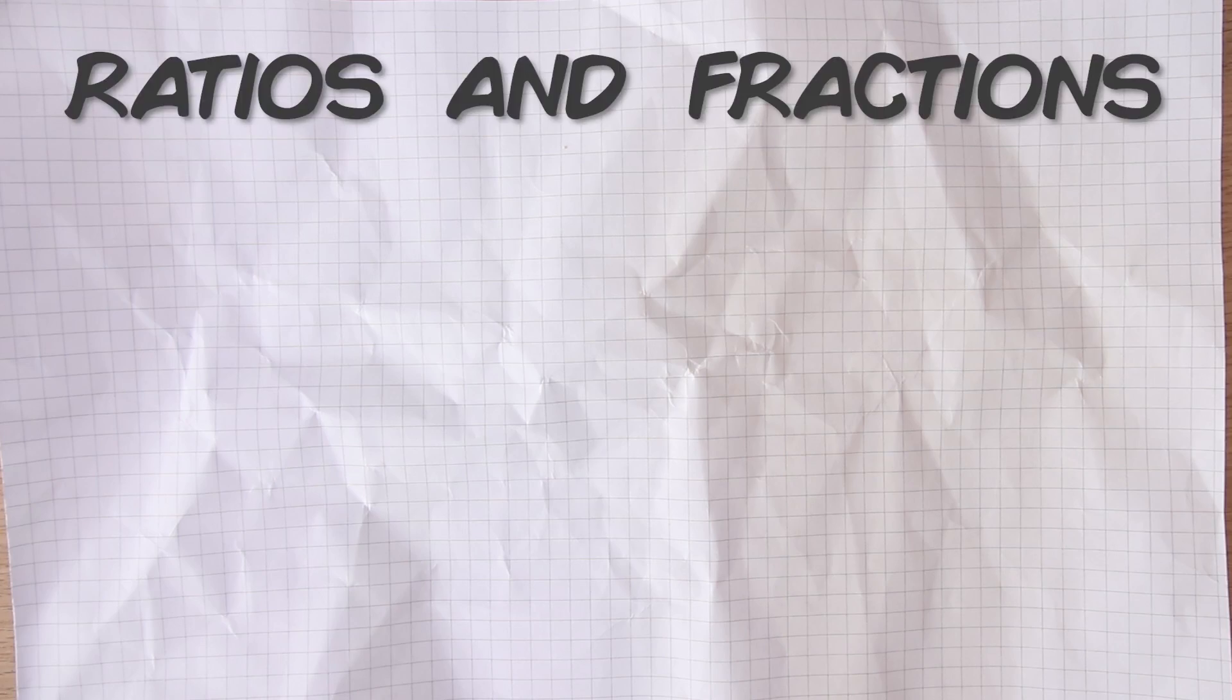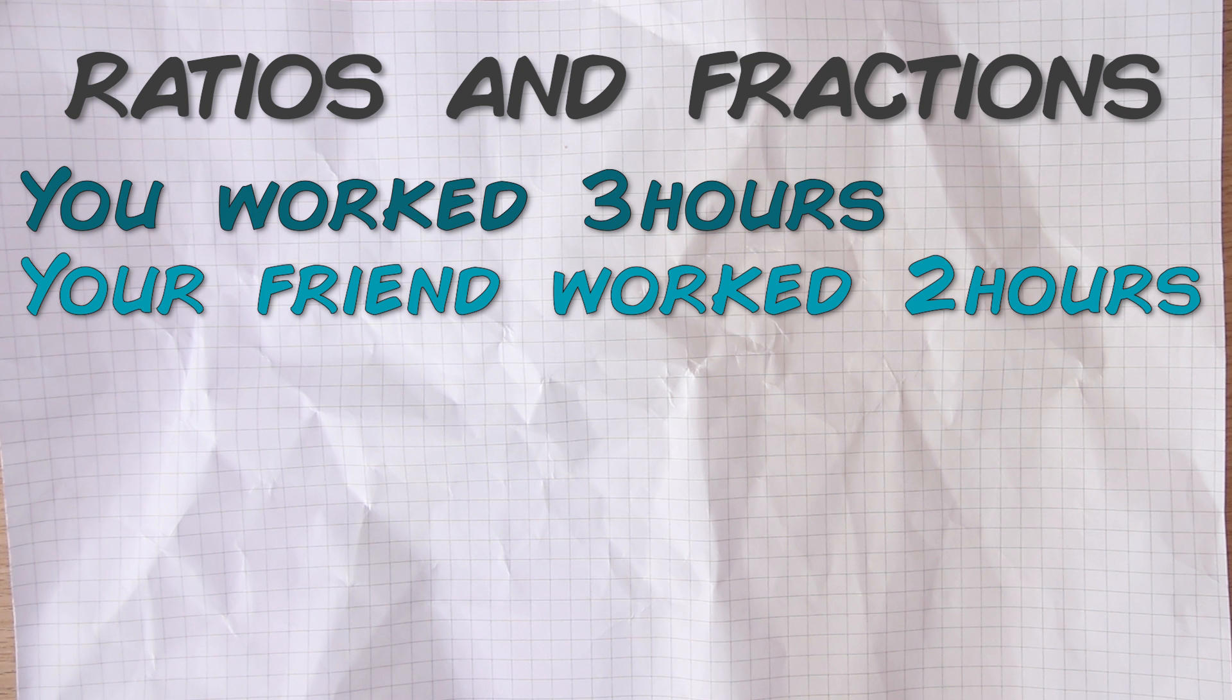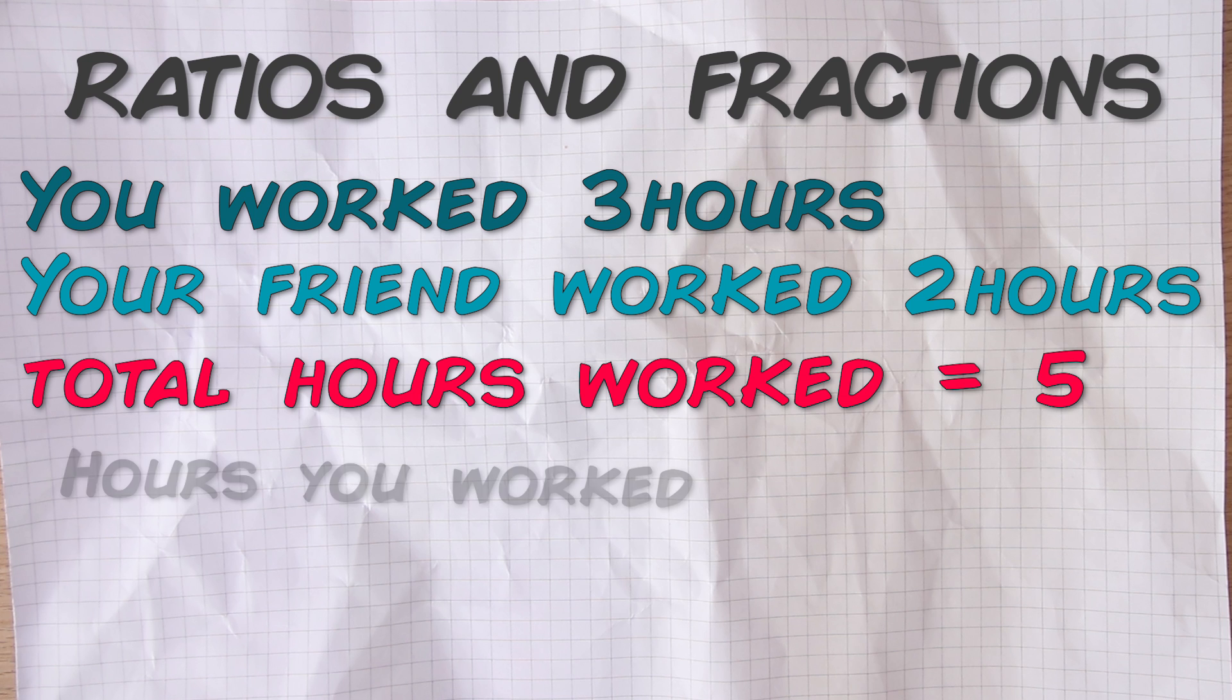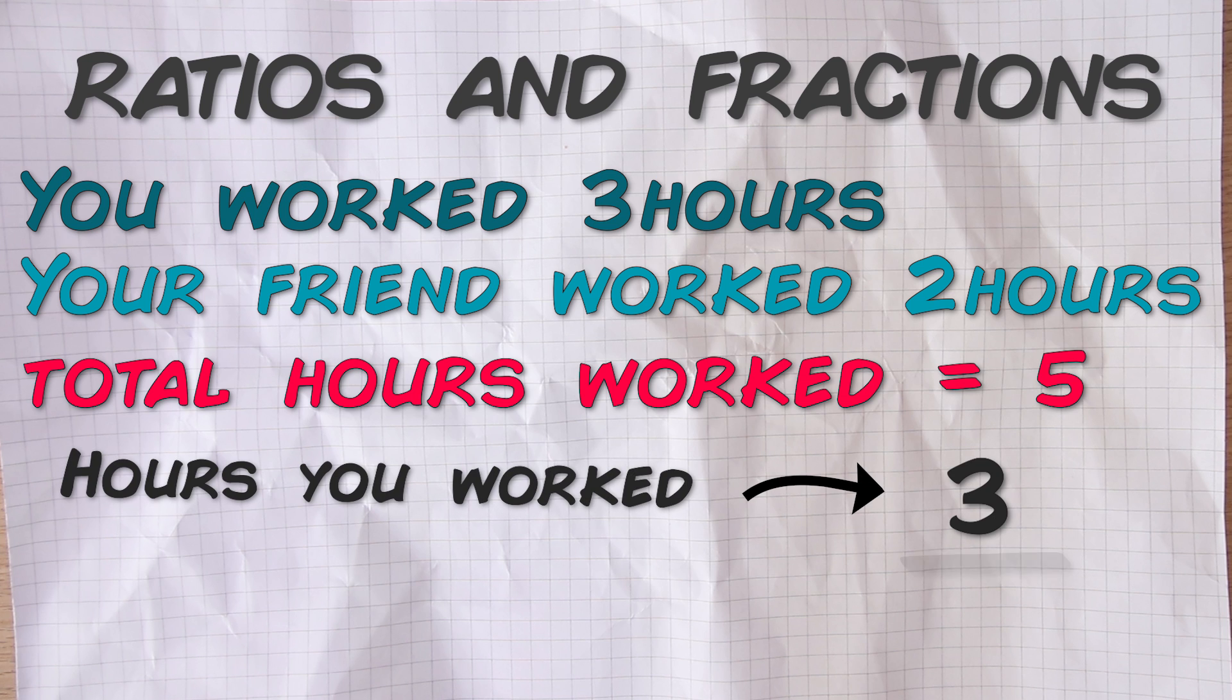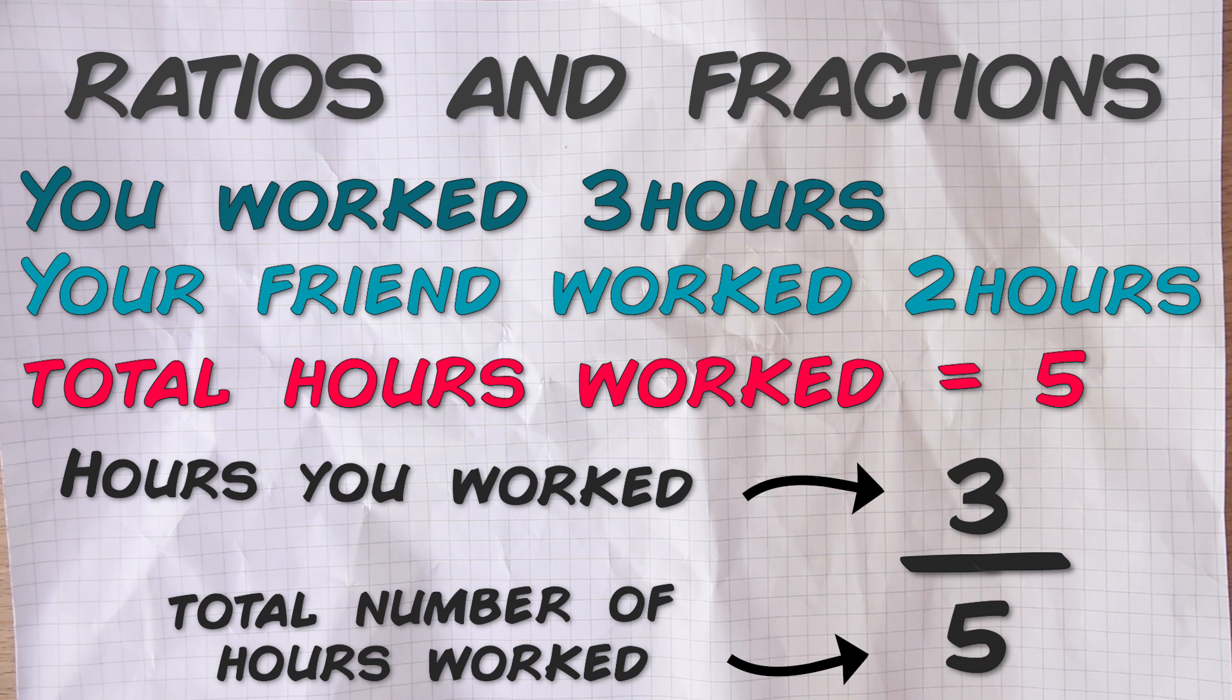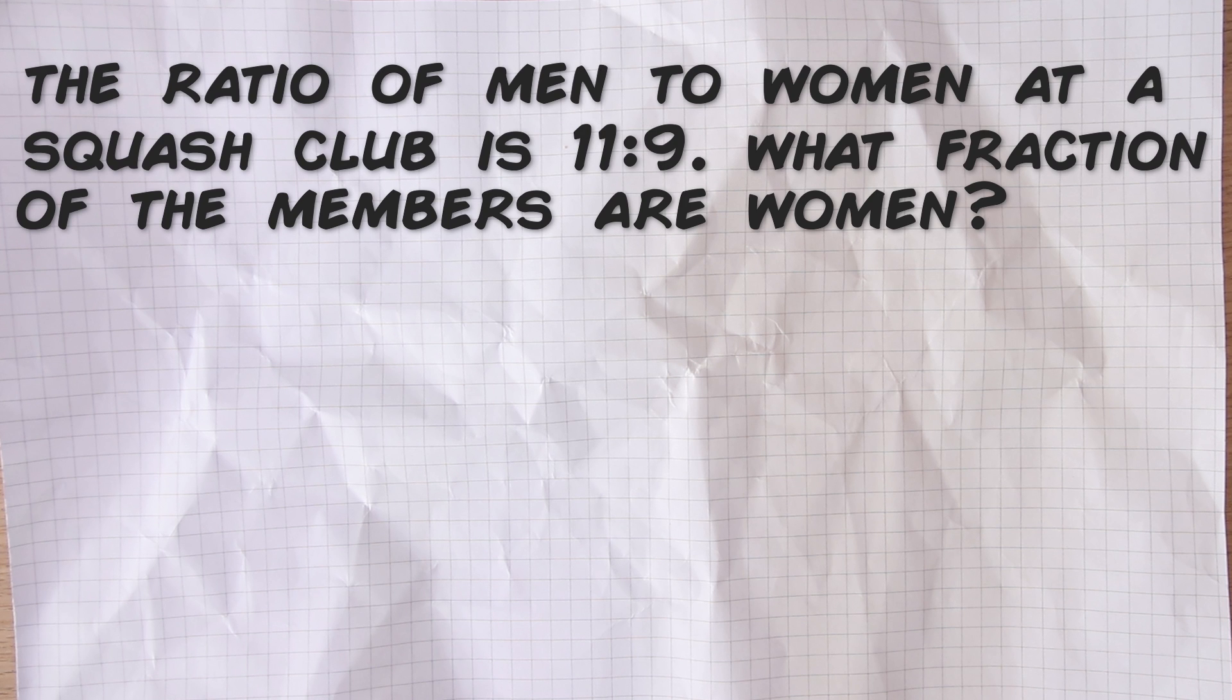The last thing that I want to look at in this video is the relationship between fractions and ratios. So if we go back to the earlier question where you and a friend worked clearing a garden and you had done three hours work and your friend had done two, this time instead of thinking in terms of a ratio we want to know what fraction of the work you did. And to do this all we need to do is find the total number of hours which was 5 and express the number of hours that you worked as a fraction of that total. Three out of five in other words, which is three fifths. So you did three fifths of the work.